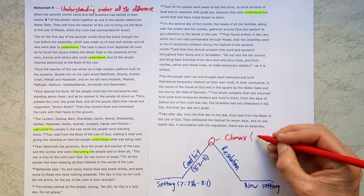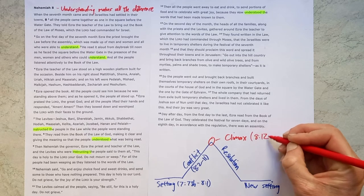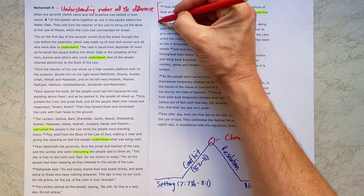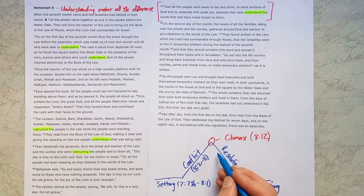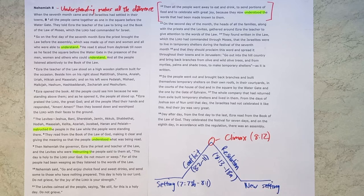Then I think the point of climax comes in 8 verse 12, as our climactic moment where the people joyfully celebrate because they now understand the word that had been made known to them. Then the story resolves itself in 8 verse 13 through to 18a where we see a genuine joyful obedience.